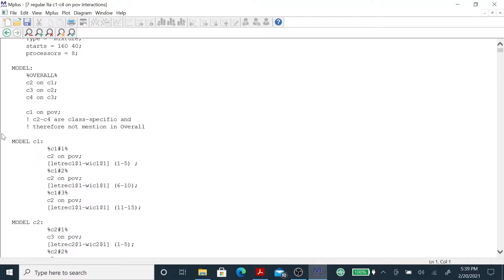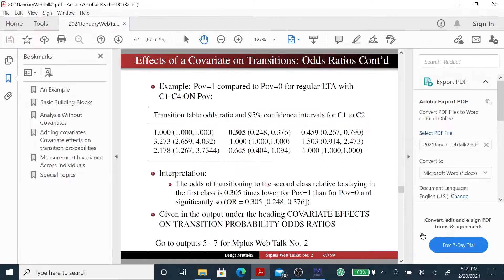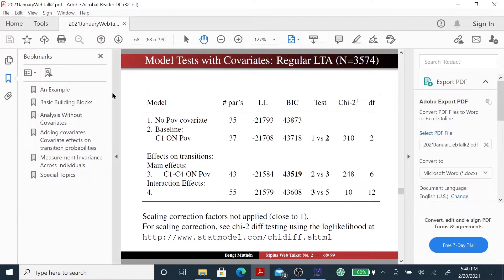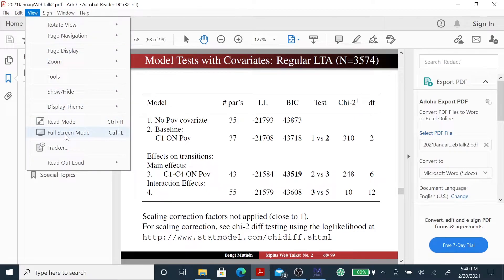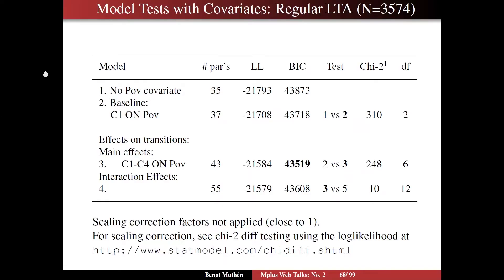So for that, you just record the log likelihood, number of parameters, and the BIC, and we end up with a table like this. We first may want to run a model without a poverty covariate, which we have done before, and then do a baseline model with C1 on poverty. Comparing model 2 and model 1 establishes that poverty has some effect on the latent class variables — that's what we want to establish first of all.